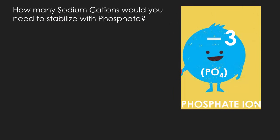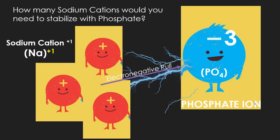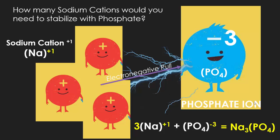For example, how many sodium cations would you need to stabilize with phosphate? Phosphate is a negative three polyatomic anion with the formula PO₄ — notice how PO₄ is in parentheses. Sodium is a positive one charge, and phosphate has that negative three charge. To balance this out, you would need three positive charges. So you need three sodium cations to balance with one phosphate ion. When you add those together, you get the final formula Na₃PO₄. Keeping the phosphate ion in parentheses makes writing these formulas incredibly easy.